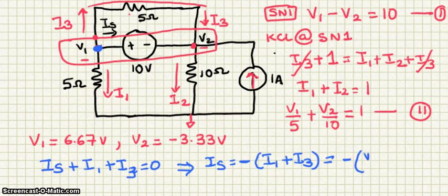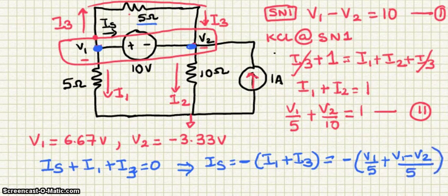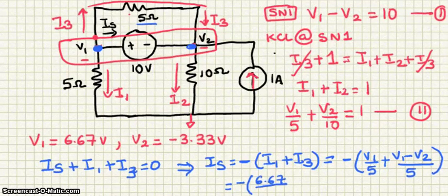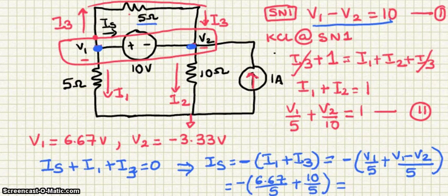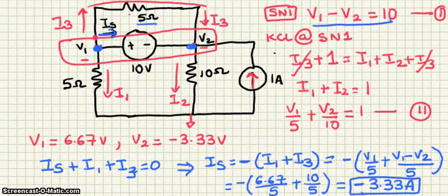I1 is V1 over 5. I3 is V1 minus V2, divided by 5. Substituting the values: V1 is 6.67, so 6.67 divided by 5, plus V1 minus V2 equals 10, so 10 divided by 5. This gives minus 1.33 minus 2, for a total of minus 3.33 amps. So IS equals 3.33 amps going towards the positive side of the 10-volt voltage supply.